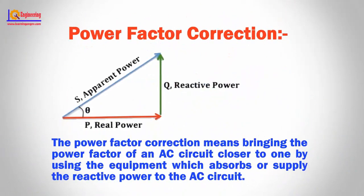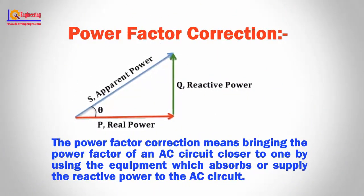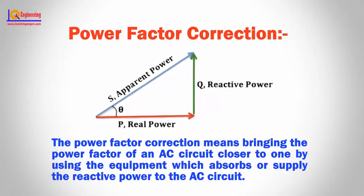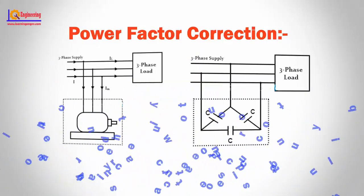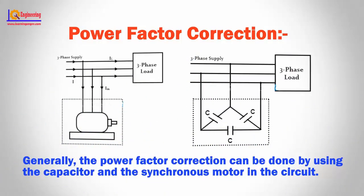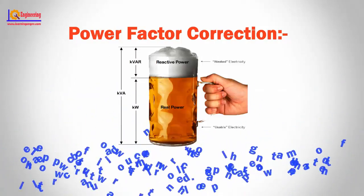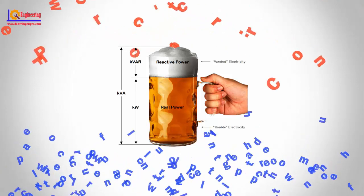Power factor correction means bringing the power factor of an AC circuit closer to one by using equipment which absorbs or supplies reactive power to the AC circuit. Power factor correction will not change the amount of real power, but it will reduce the apparent power and the total current drawn from the load.